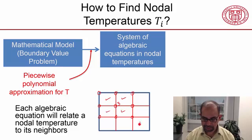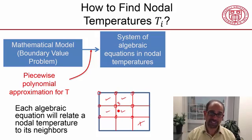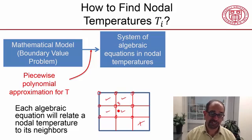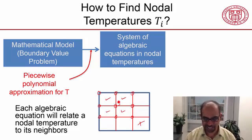A node that is not connected to a particular element won't be involved in writing that relationship. We also know there's going to be a constant term that comes from heat generation. In this case, we don't have heat generation, so the algebraic equation at this node won't contain any constant term.